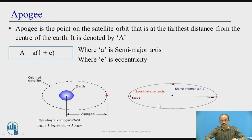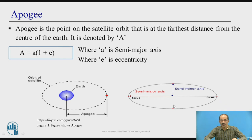What is the semi-major axis? When you have an ellipse, it consists of two focuses — focus 1 and focus 2 — and a center of the ellipse. The satellite revolves in an elliptical path. The furthest distance from one point on the orbit to another point on the orbit, crossing the center of the ellipse, is called the major axis. Half of that distance is the semi-major axis. The shortest distance between two points on the orbit is the minor axis, and half of that is the semi-minor axis.